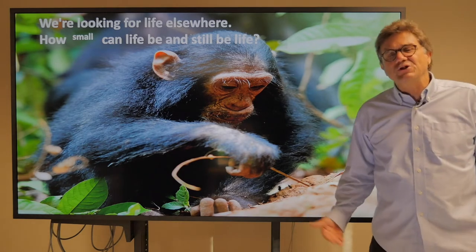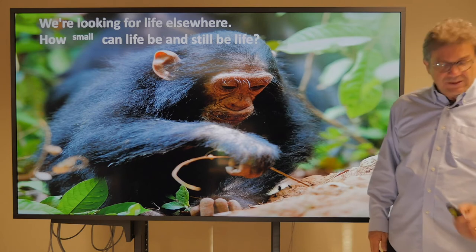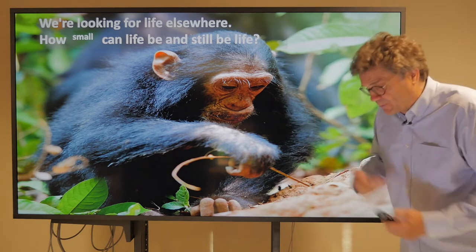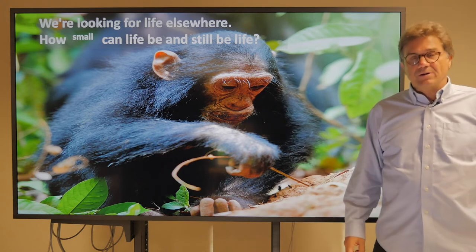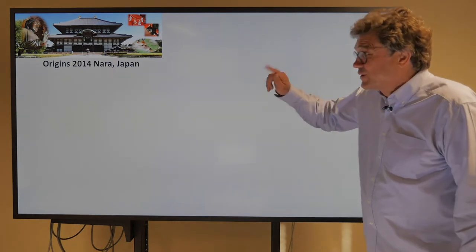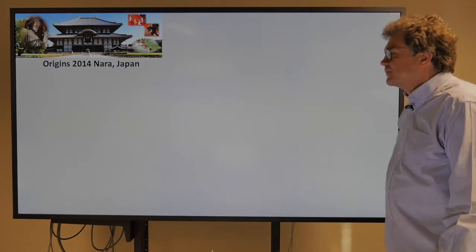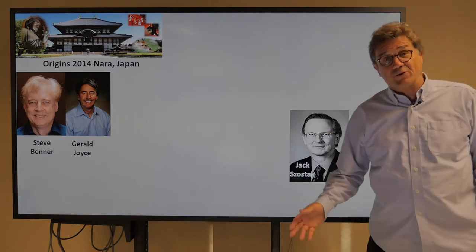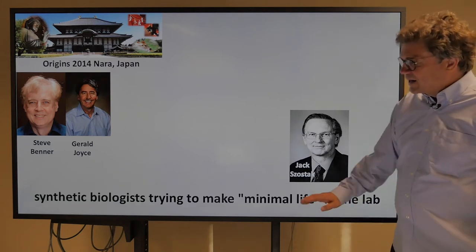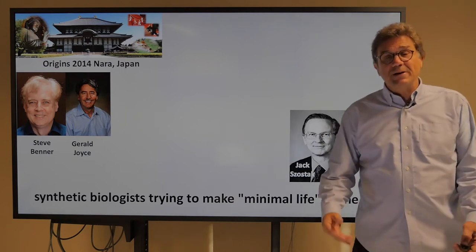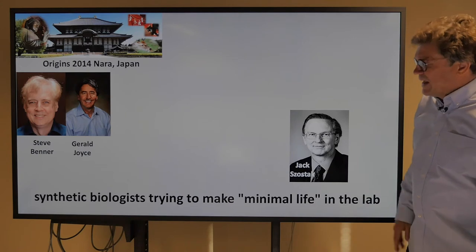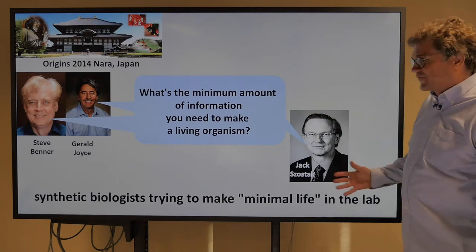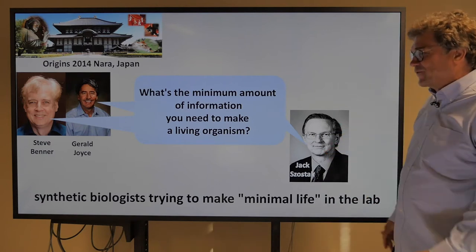We're looking for life elsewhere, so how small can life be and still be life? That's important, because if you're going to build an instrument to find it, you need to know how big it is — do you just turn on the lights and see a whale or giraffe on Mars, or do you need super powerful microscopes to look for tiny 10-nanometer life? In 2014 I went to a conference on the origins of life in Nara, Japan, where I saw Steve Benner, Gerald Joyce, and Jack Szostak. These synthetic biologists are trying to make minimal life in the laboratory — they want to make the minimum life form and identify the minimum amount of information needed to make a living organism.